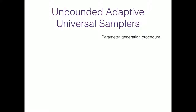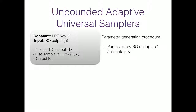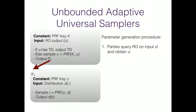Our actual construction has a parameter generation procedure where parties start by querying the random oracle on input their distribution and obtain some output u from the random oracle. They then input u into an obfuscated program that checks if this random oracle output has some hidden trapdoor format. If it does, it extracts the trapdoor and outputs it. If this check fails, the program proceeds normally — it samples some randomness using the random oracle output and outputs a new program with hardwired key c, which generates more randomness using c and on input a distribution outputs D applied to this randomness, giving a sample from D.